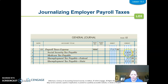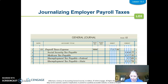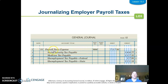For the payroll tax journal entry: Social Security is 6.2% of total earnings, Medicare is 1.45% of total earnings, federal unemployment (FUTA) is the FUTA earnings of $2,244 times 0.8% giving $17.95, and state unemployment (SUTA) is $2,244 times 5.4%. Add all four credits together to get the debit to payroll taxes expense — not salary expense, but payroll taxes expense.